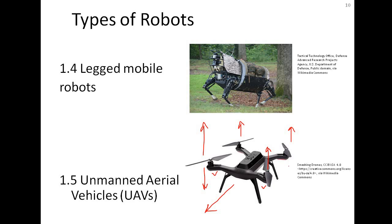By comparison, a wheeled mobile robot has limited degrees of freedom, is constrained to the ground, and must turn or maneuver to change direction — making it less agile than a quadcopter.